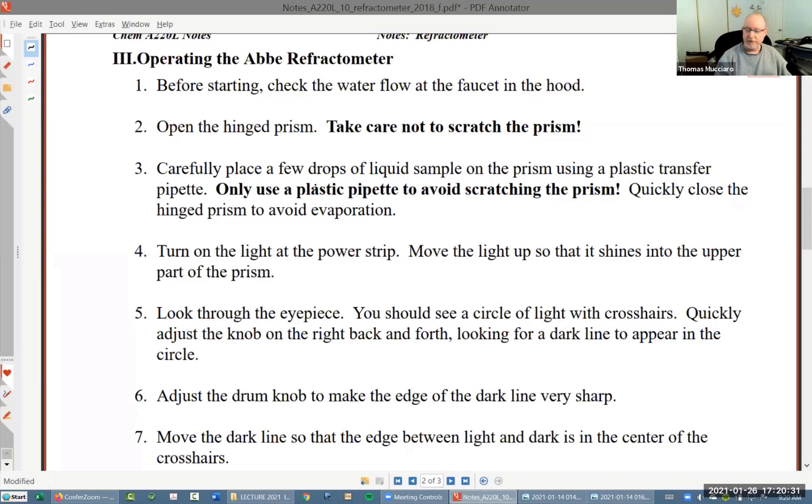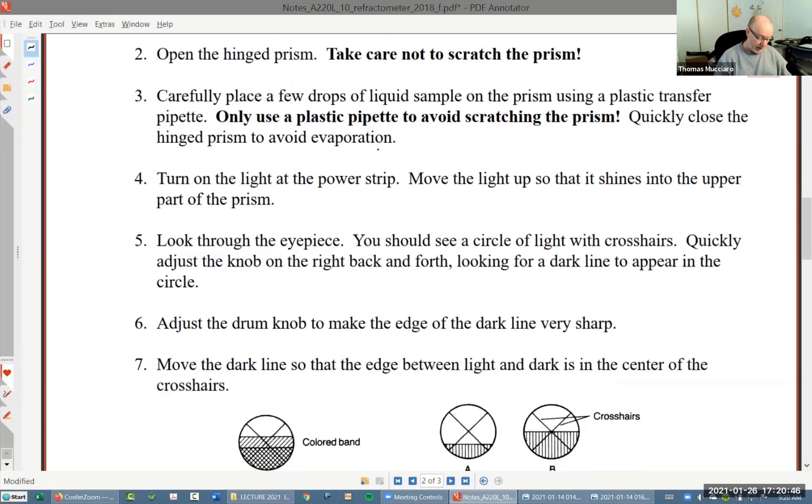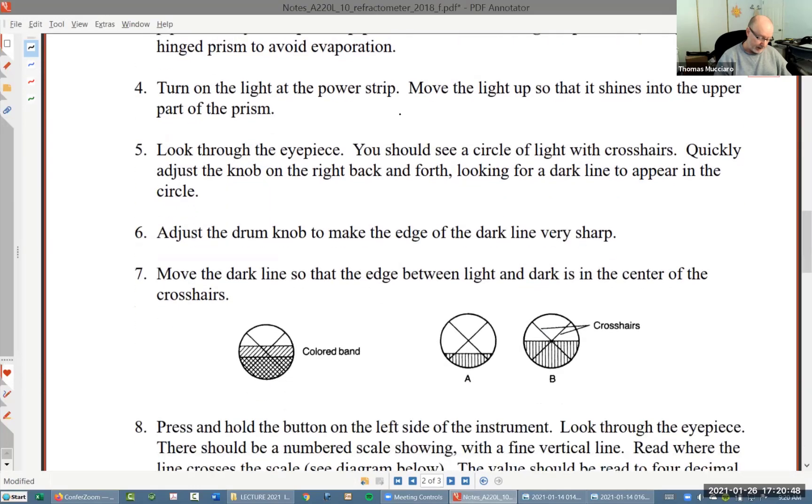We also need to make sure we put enough on there that it really sandwiches the whole prism, because if part of the prism is uncovered, then we get a weird distortion effect in our measurement. And then we turn on the thing. We look through the eyepiece, and let me show you what we're basically going to be looking at.